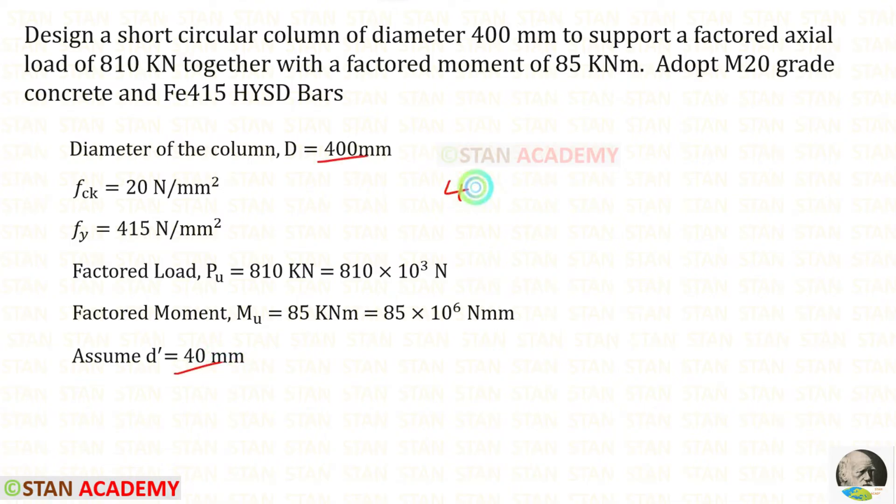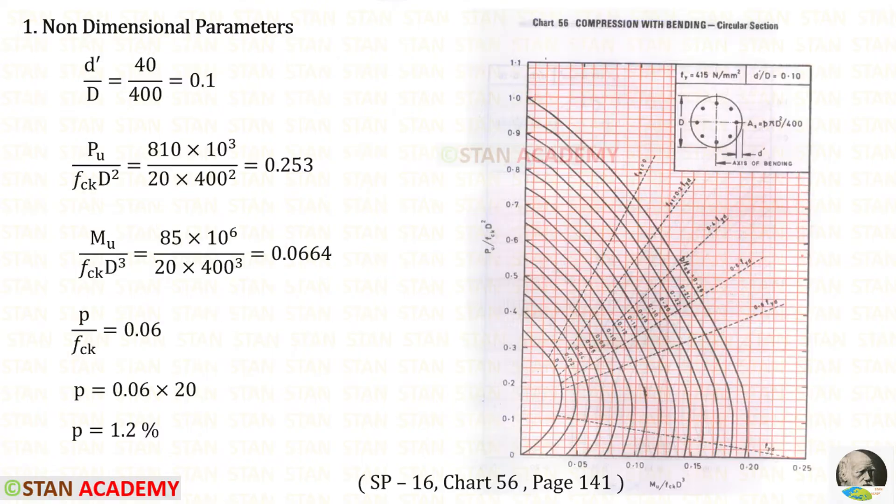So 40 by 400 we will get 0.1. Now let us open the book SP16 chart number 56, it is in the page number 141. We have selected this chart because we have circular cross section and D' upon D is 0.1.